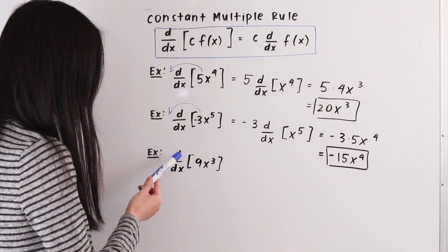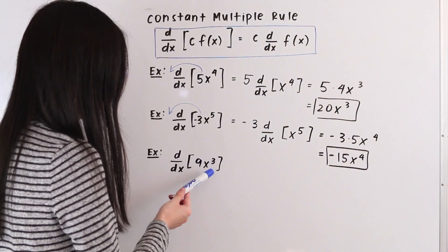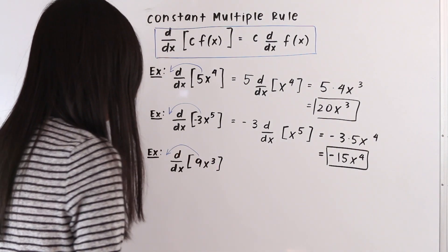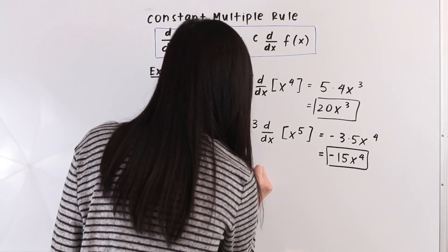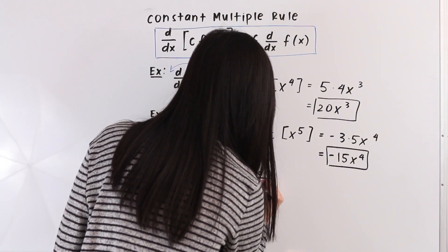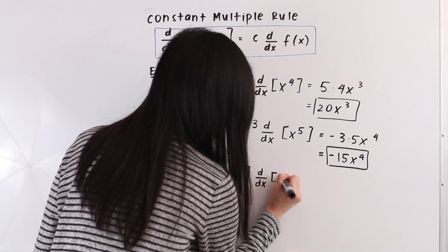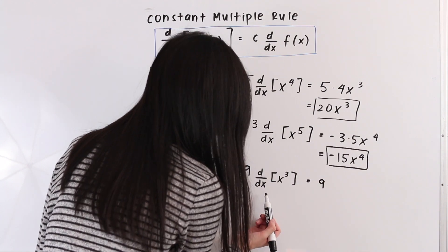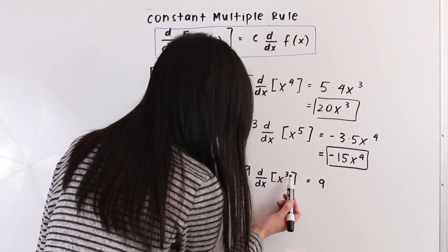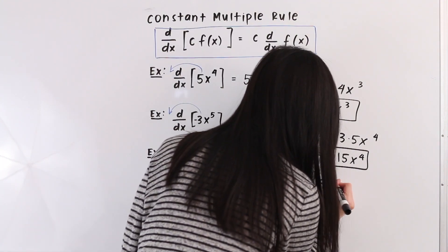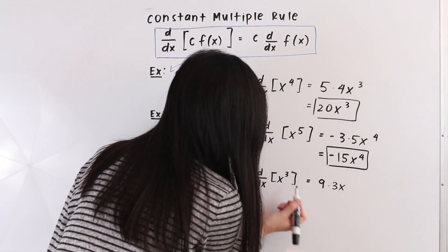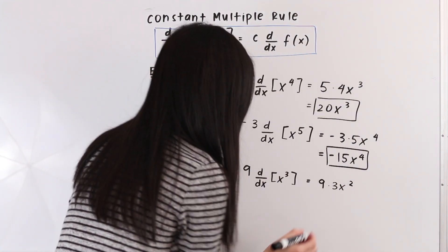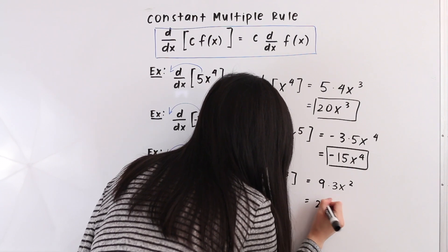In this last example we have the derivative with respect to x of 9x cubed. As our first step, let's bring this constant out of our derivative, giving us 9 times the derivative with respect to x of x cubed. We use the power rule — we bring the exponent down, giving us times 3 and then an x, and subtract 1 from our exponent. So 3 minus 1 equals 2, and here we have 27x squared.